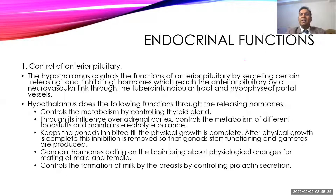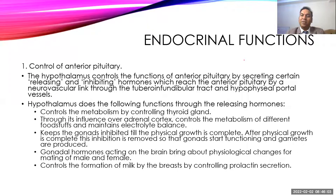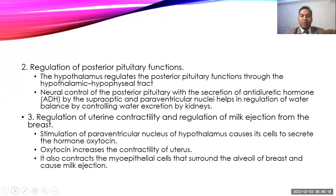The hypothalamus is also important for the initiation of puberty. It also releases prolactin-releasing hormone, which increases release of prolactin — acting on breast tissue to stimulate milk formation — and prolactin-inhibiting hormone, which inhibits prolactin secretion. Additionally, the hypothalamus releases growth hormone-releasing hormone and growth hormone-inhibiting hormone, which together regulate growth hormone release.